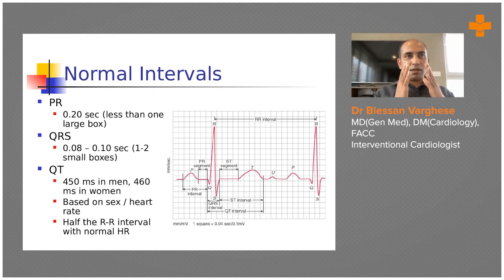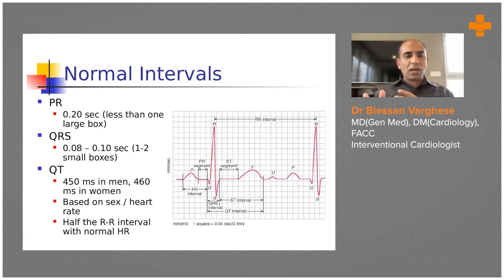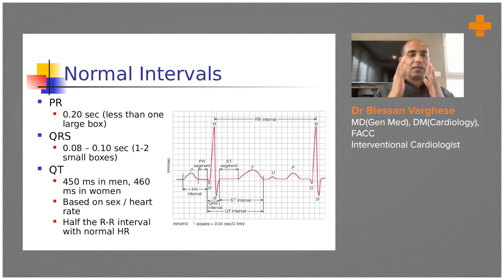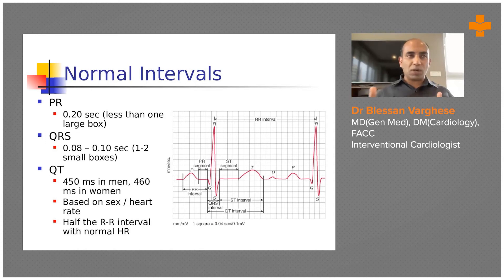Each small square is 0.04 seconds, so the QRS complex should be inscribed within about three small boxes. When it goes beyond that, the QRS has widened. A widened QRS is what we call a bundle branch block.